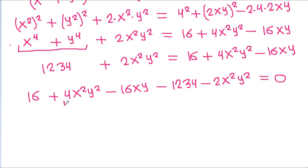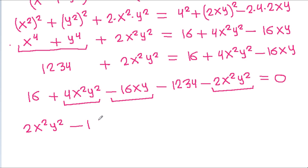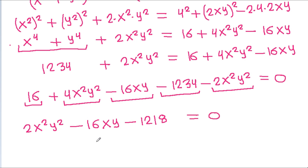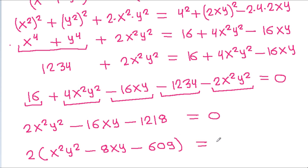Simplifying: 4xy squared minus 2xy squared gives 2xy squared, and 16 minus 234 gives negative 218. So we get 2xy squared minus 16xy minus 218, which simplifies further. Dividing through gives xy squared minus 8xy minus 169 is equal to 0.